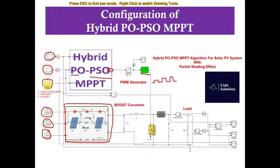For mode selection, we use a constant block. When you type 0, it operates in hybrid PO-PSO MPPT. When you type 1, it operates in PSO MPPT. When you type 2, it operates in PO MPPT algorithm. Next we'll see the blocks inside the hybrid PO-PSO MPPT.